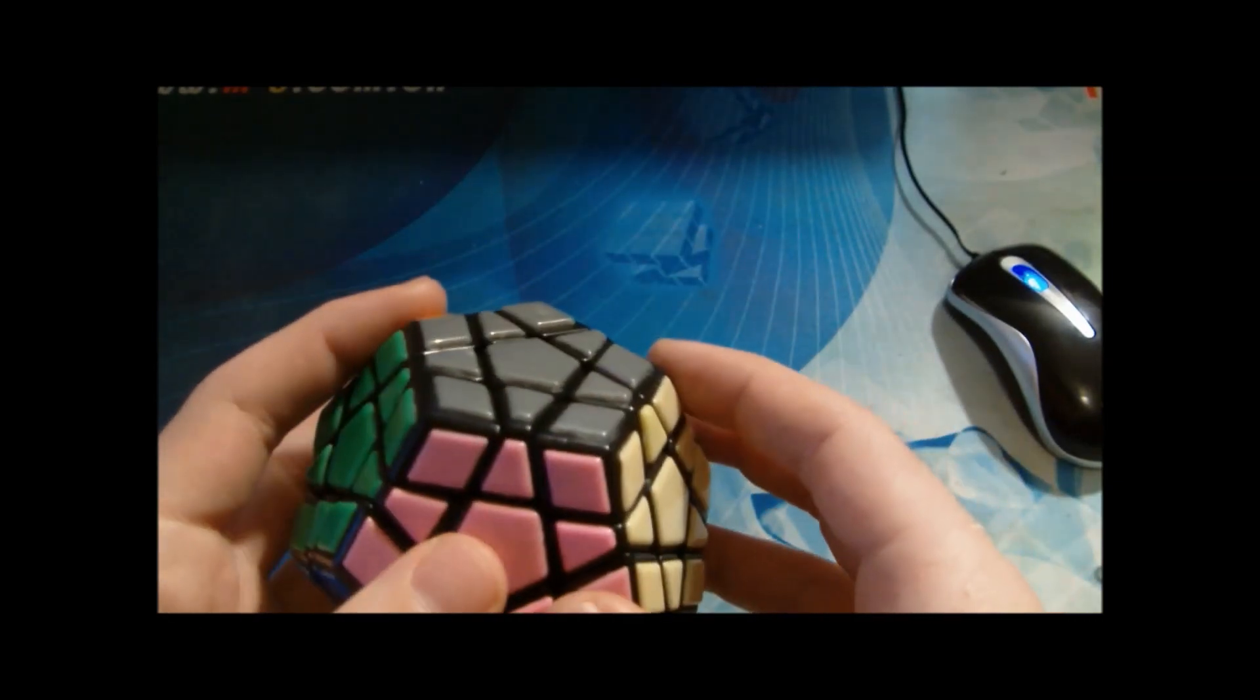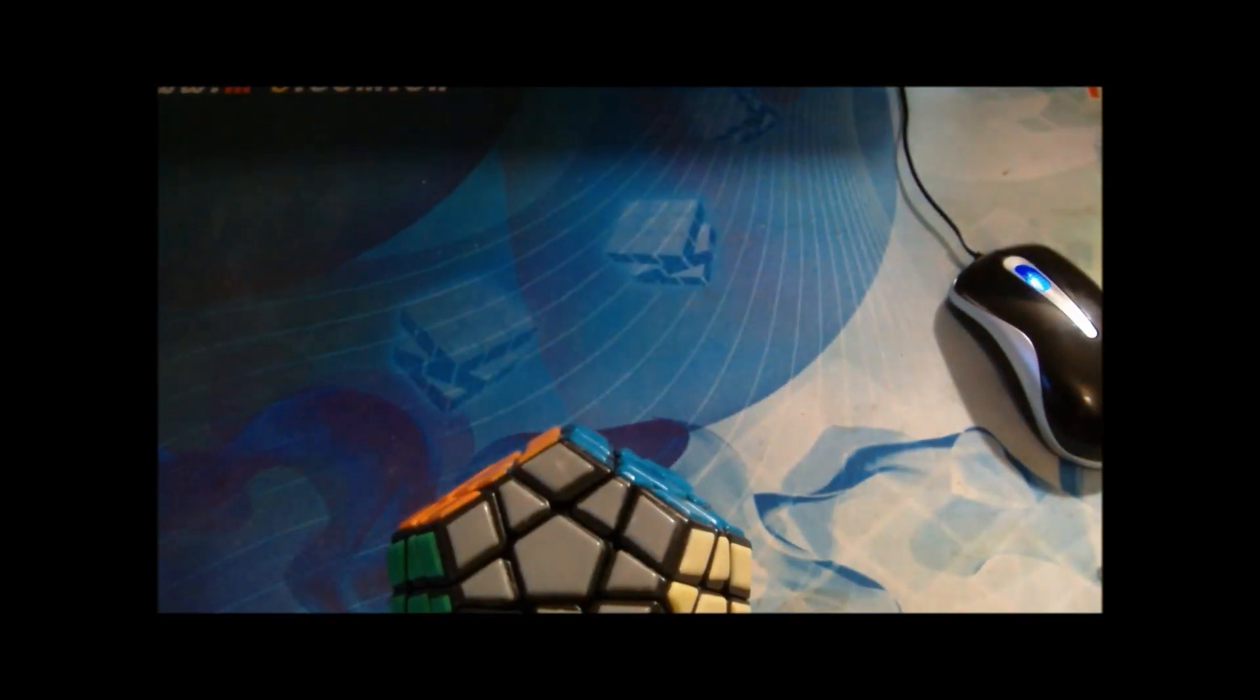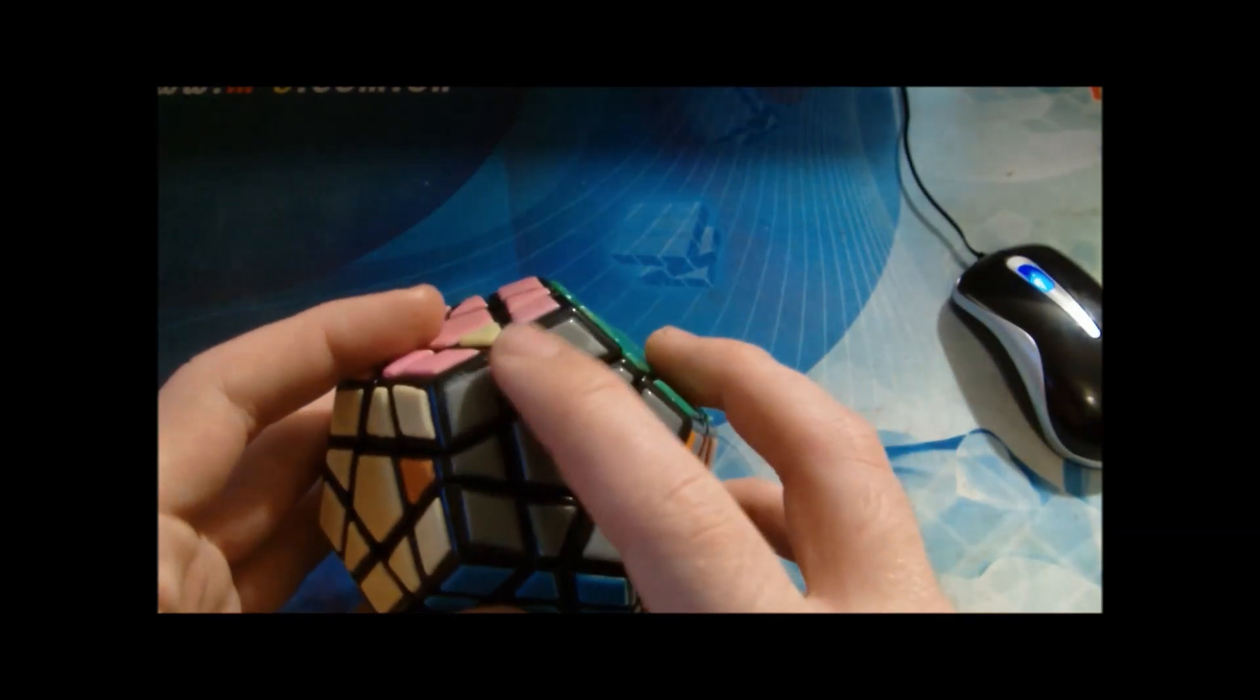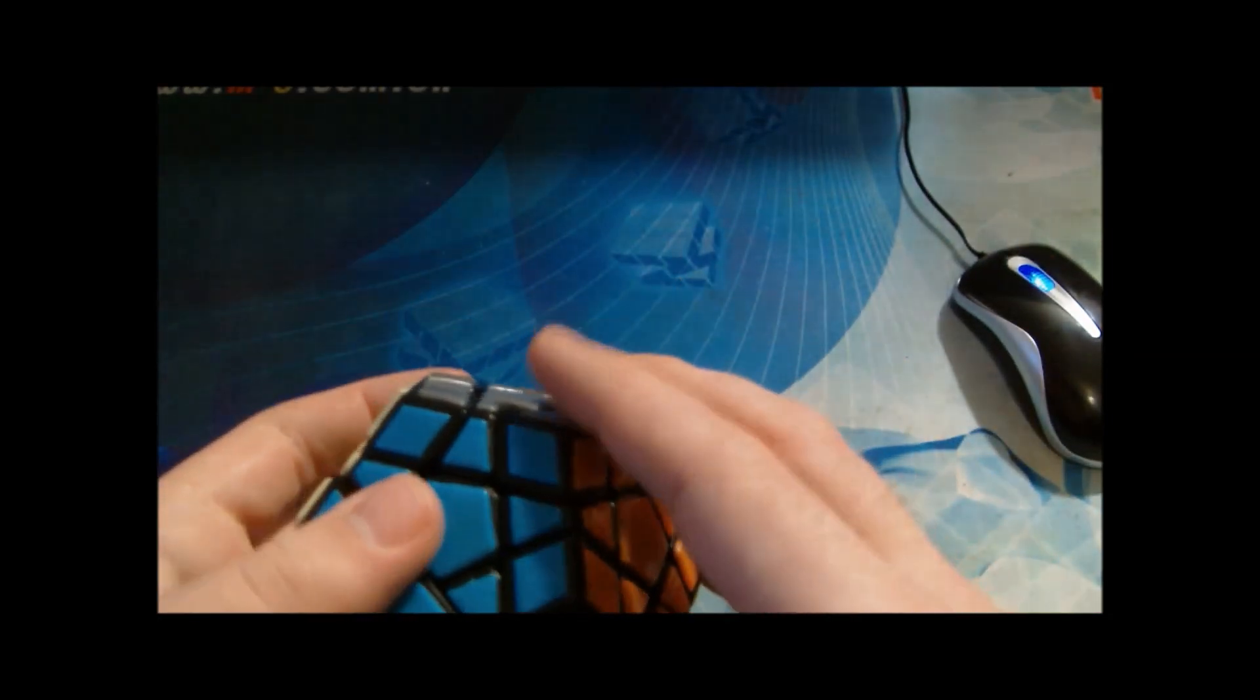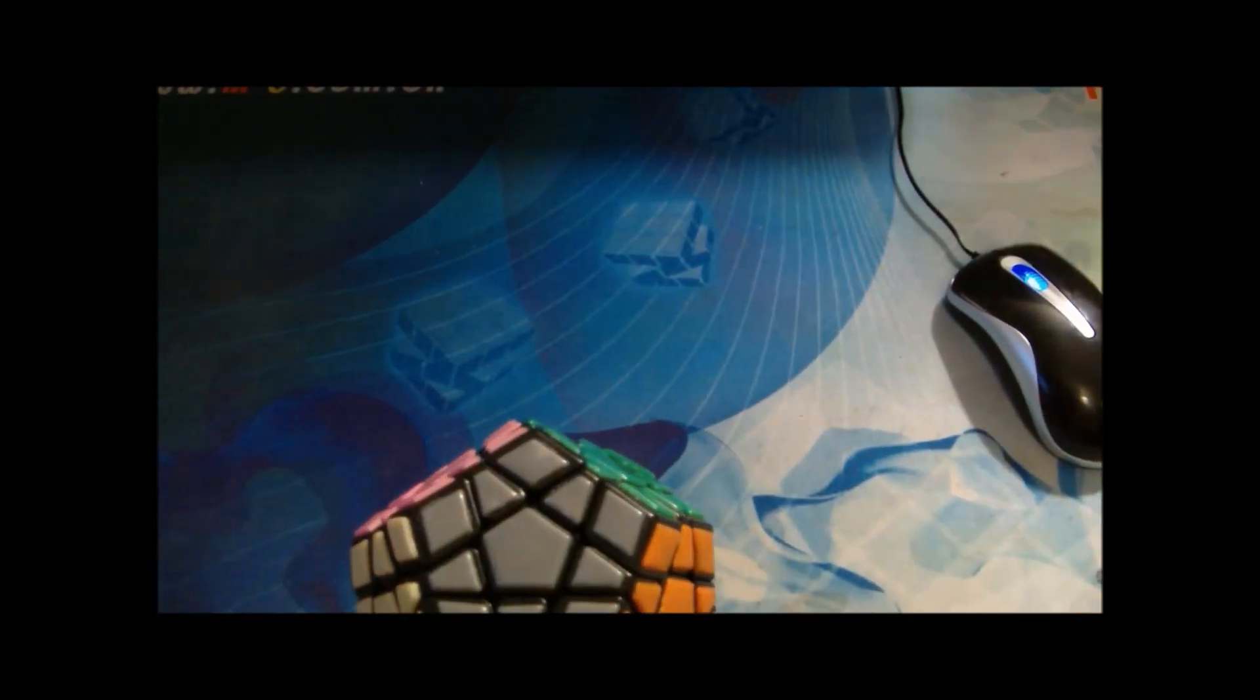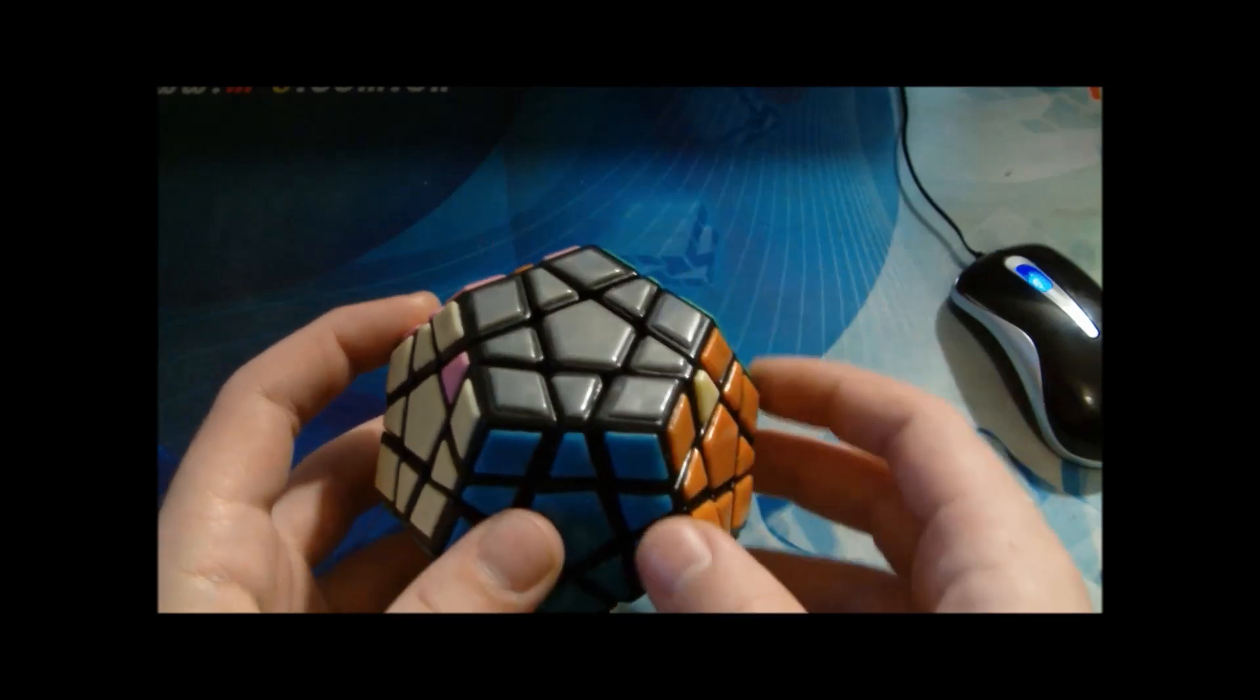For this EPLL case, I recognize it and execute it from this angle. I see that this unsolved edge goes to this position and I do this alg. For this case, I recognize it and execute it the same way as the previous case, except that this unsolved edge goes to this position instead of this one, and I do this alg.